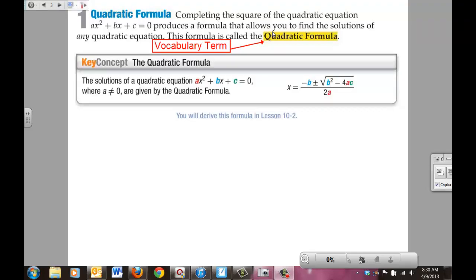Key Concept says the solutions of a quadratic equation ax² + bx + c = 0, where a is not equal to 0, are given by the quadratic formula. It says that x is equal to negative b plus or minus the square root of b² - 4ac, all divided by 2a.